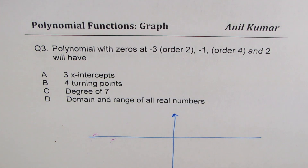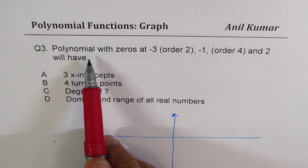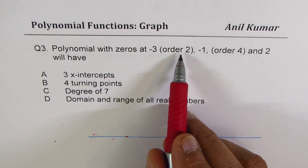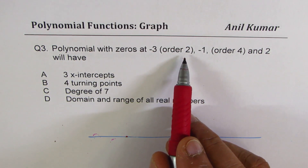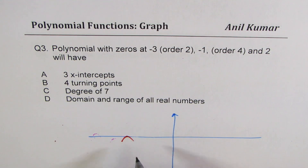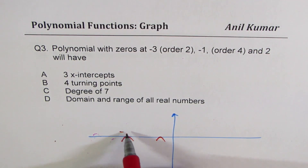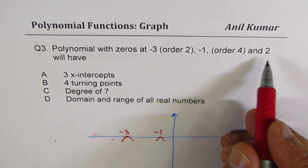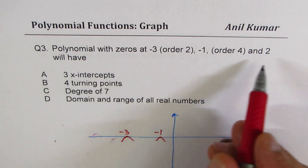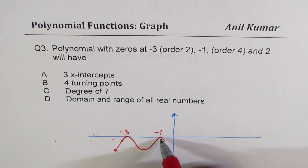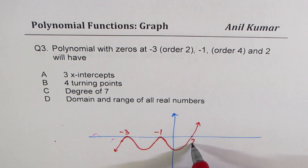If you draw this graph, you might get your answer. The zero at minus 3 is of order 2, so the graph turns there. At minus 1 of order 4, it turns again. At 2 it is linear, so the graph crosses. The graph looks something like this, where the crossing point is at 2.